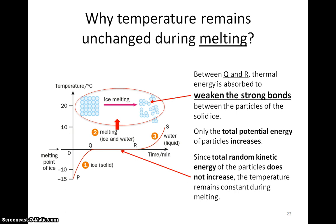So, what happens to the tiny particles in the ice when the ice melts? Recall that in solid state, particles are closely packed together and held together by strong attractive forces or bonds between them. When we heat the ice from P to Q, the ice particles vibrate about their fixed position faster and more vigorously. Hence, the random KE of the particles increases.